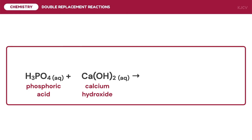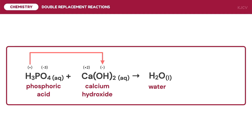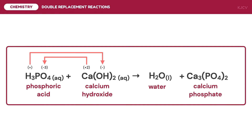For the last example, we have the reaction between phosphoric acid and calcium hydroxide. In phosphoric acid, hydrogen is the positive ion and phosphate is the negative ion with a charge of negative 3. For the base, calcium is the positive ion with a charge of positive 2, and hydroxide, having a charge of negative 1, is the anion. Hydrogen and hydroxide ions will pair to form water. On the other hand, calcium will bond with phosphate to form calcium phosphate. There will be a criss-cross of charges; therefore, the charges positive 2 and negative 3 of calcium and phosphate respectively will be the subscripts of the opposite ion.